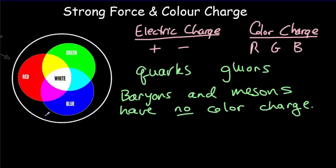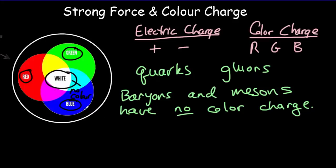In a baryon with three quarks, one quark would have to be red, one green, and one blue. Combining those three colors gives white — really no color. So all baryons have three different-colored quarks, giving them no net color charge. For mesons, consider a blue quark and an anti-blue quark. Anti-blue is really yellow, so combining a color and its opposite once again gives white — no color. The way that colors combine exactly parallels the way quarks combine.